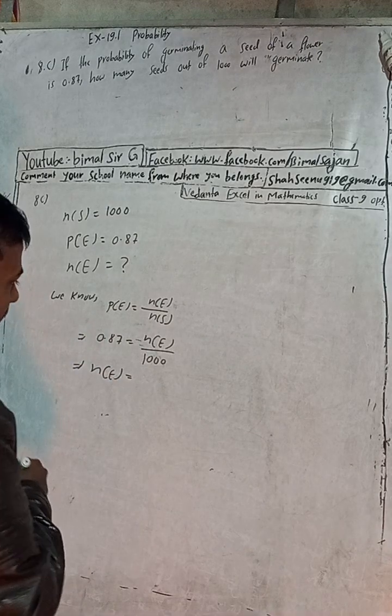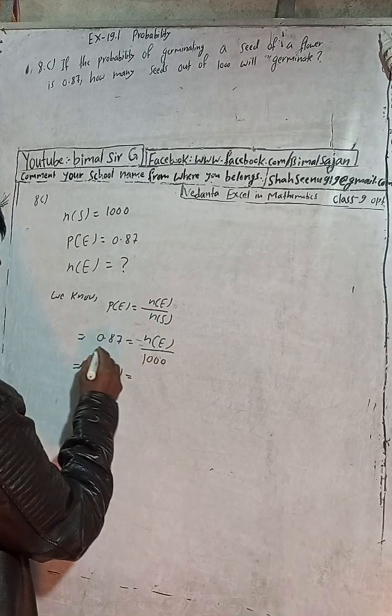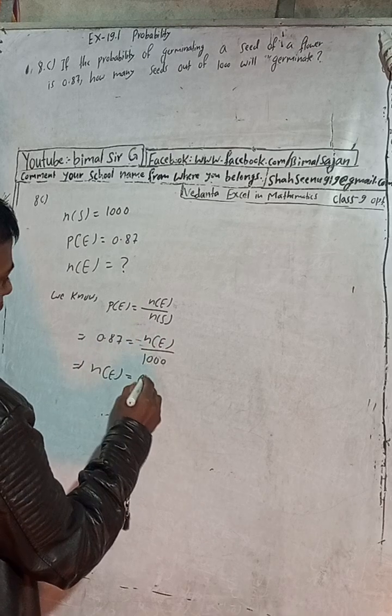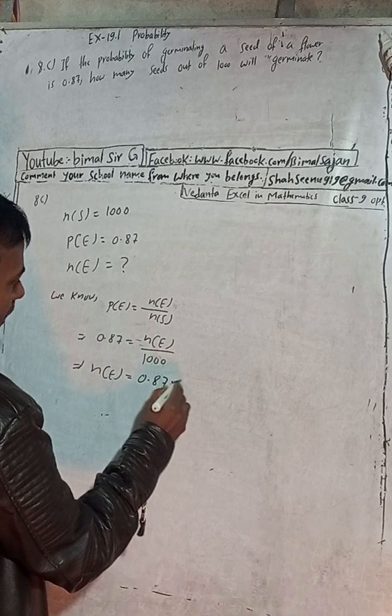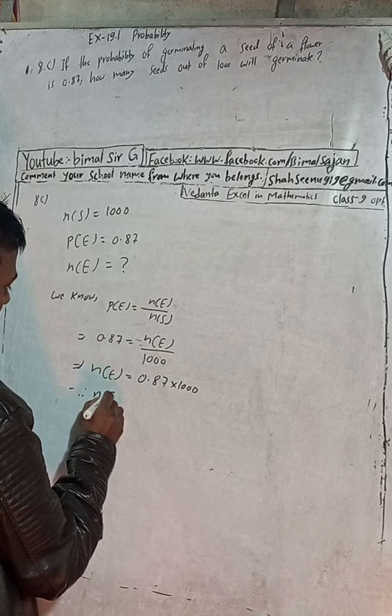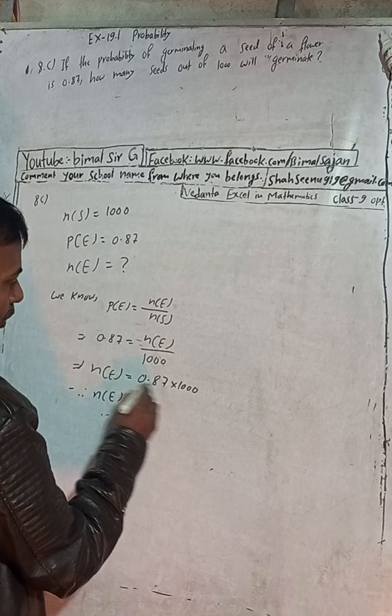Now cross multiply this, and this is what 0.87 into 1000.